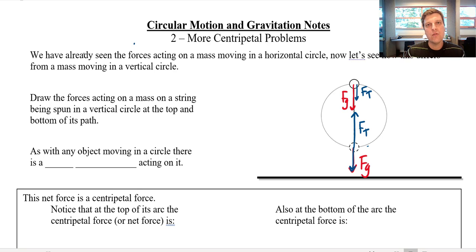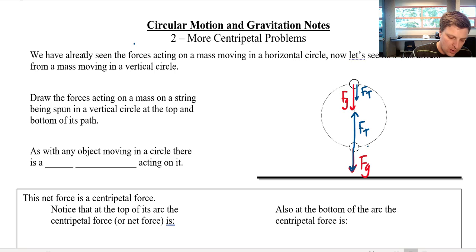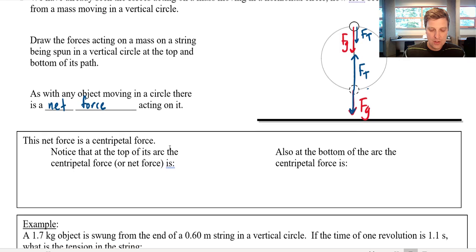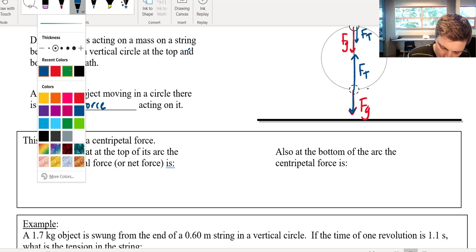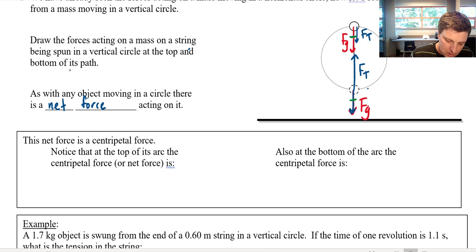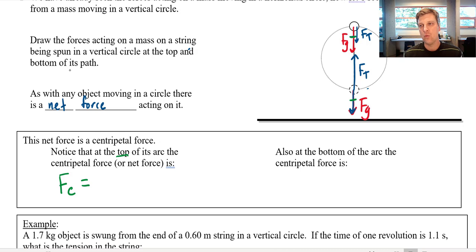Remember, anytime something moves in a circle, there's a centripetal force — that's the net force causing it to move in a circle. But in this case, the net force is going to be different depending on where you are in the circle. The force of gravity is going to be the same at the top as at the bottom — that's not changing. What's changing as you go around the circle is the tension force. So at the top of the circle, if I do my FC equation — that's just a net force equation, winners minus losers — I'll take the down direction as the winning direction. FG and tension are both working in the same direction.